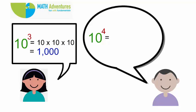10 to the power 4 is equal to 10 into 10 into 10 into 10 which is nothing but 10,000.